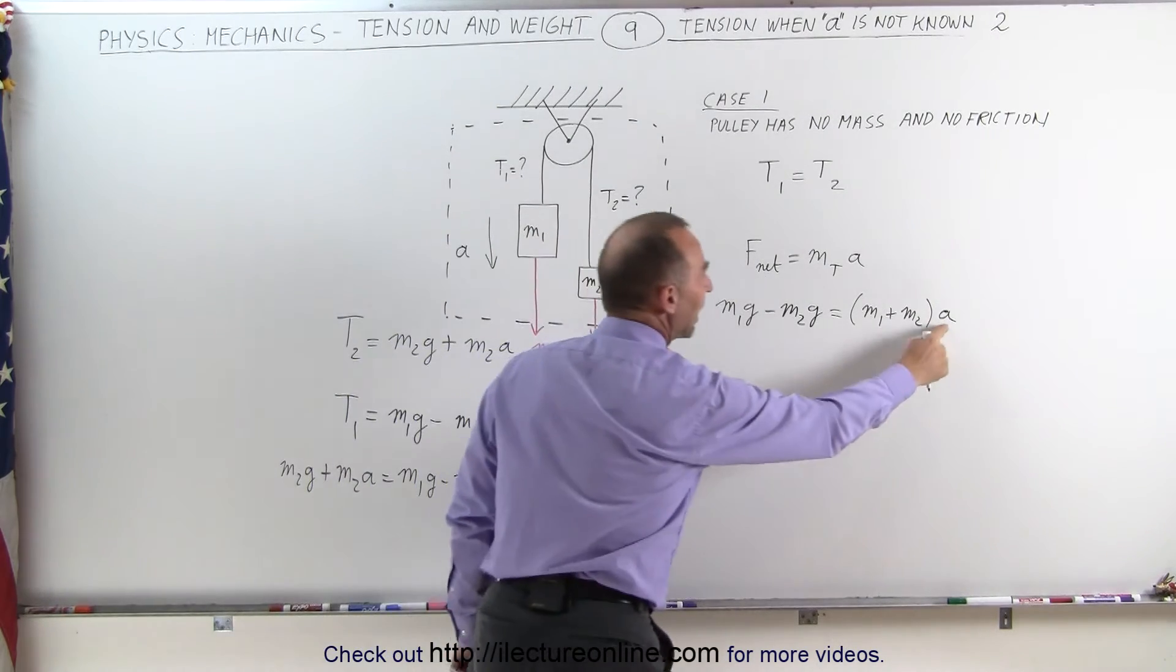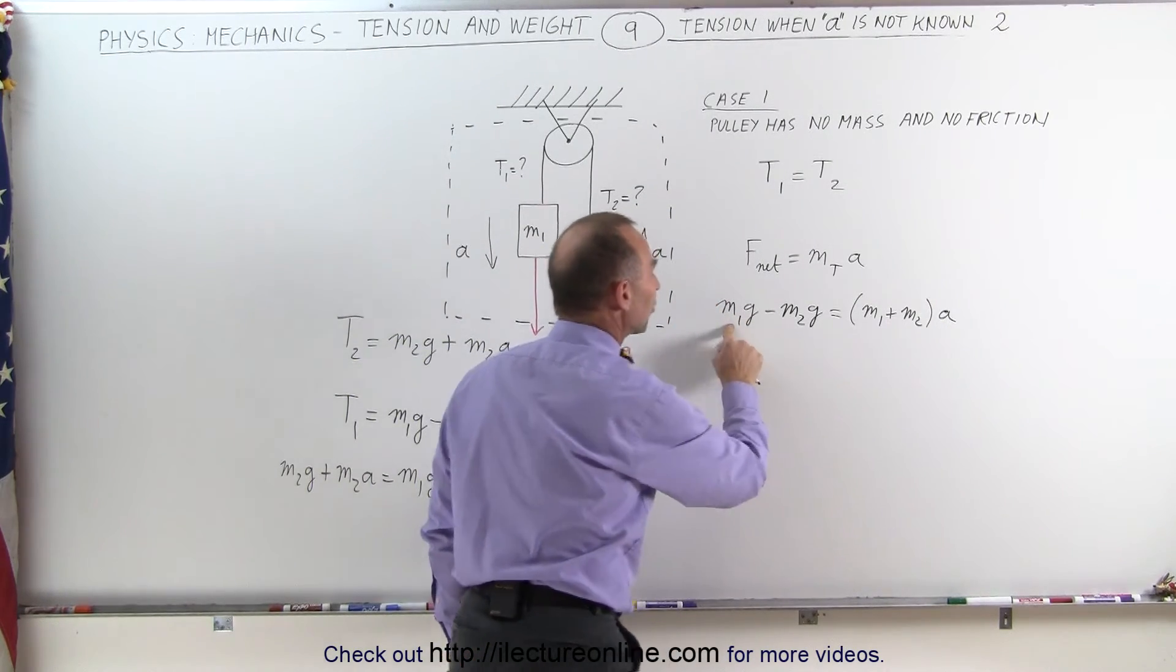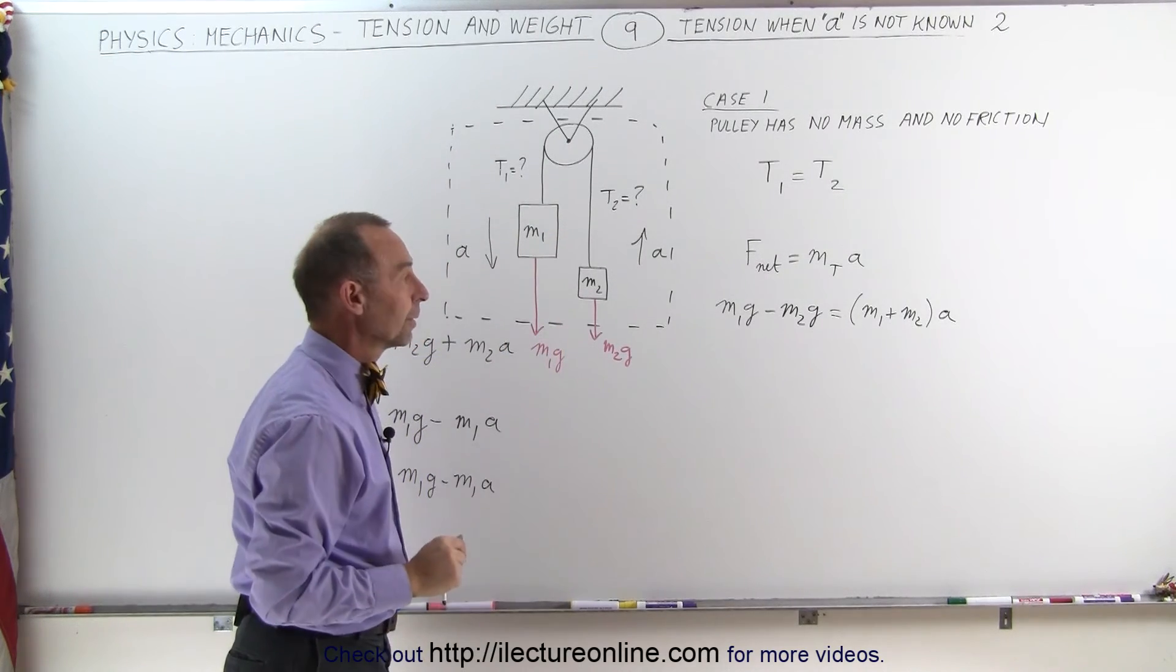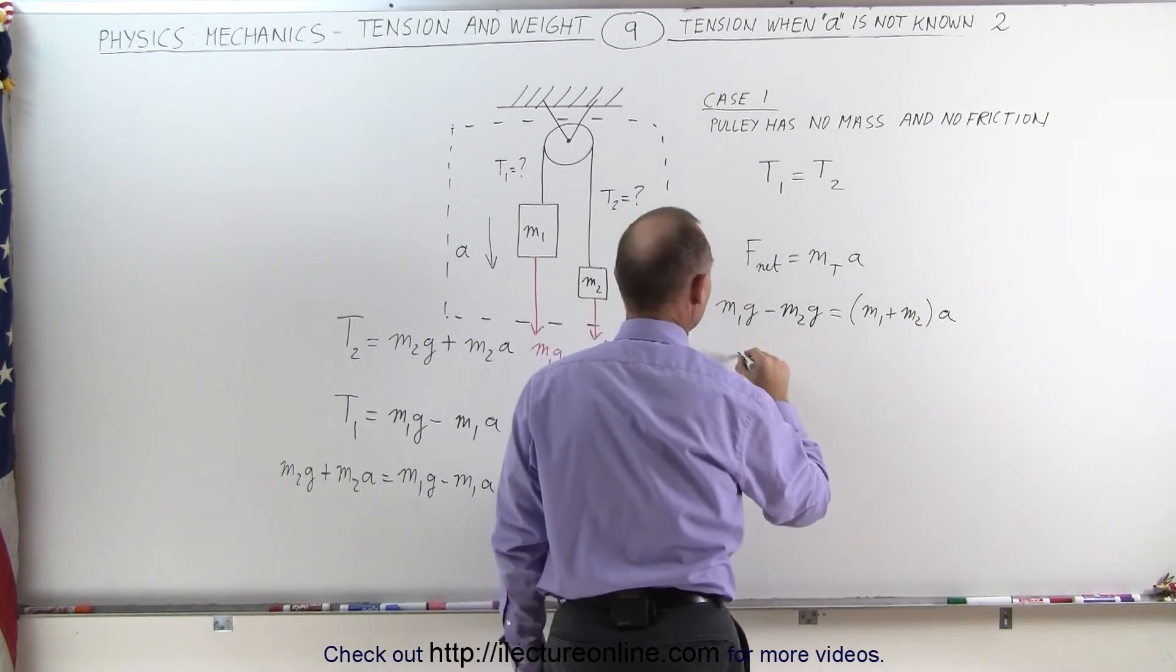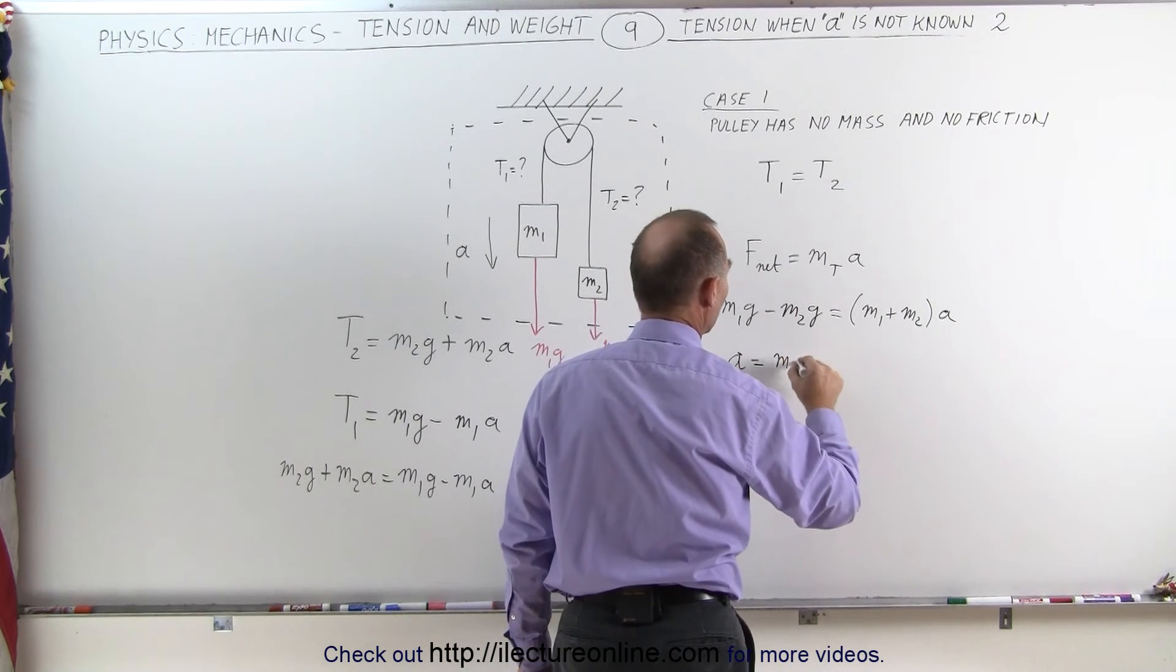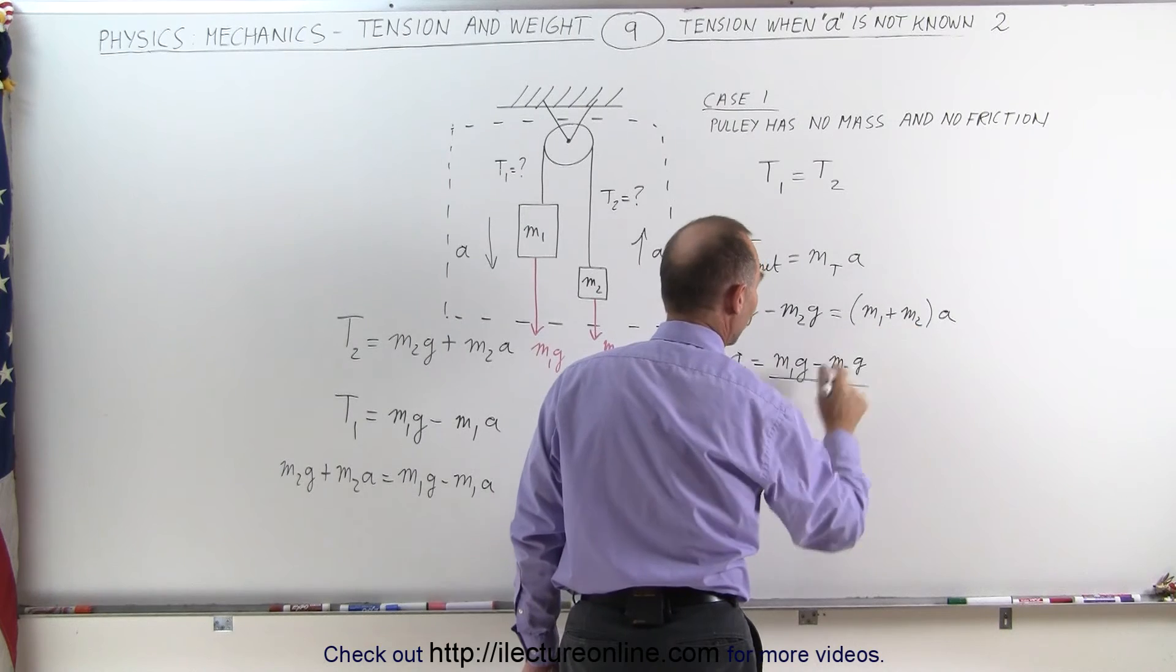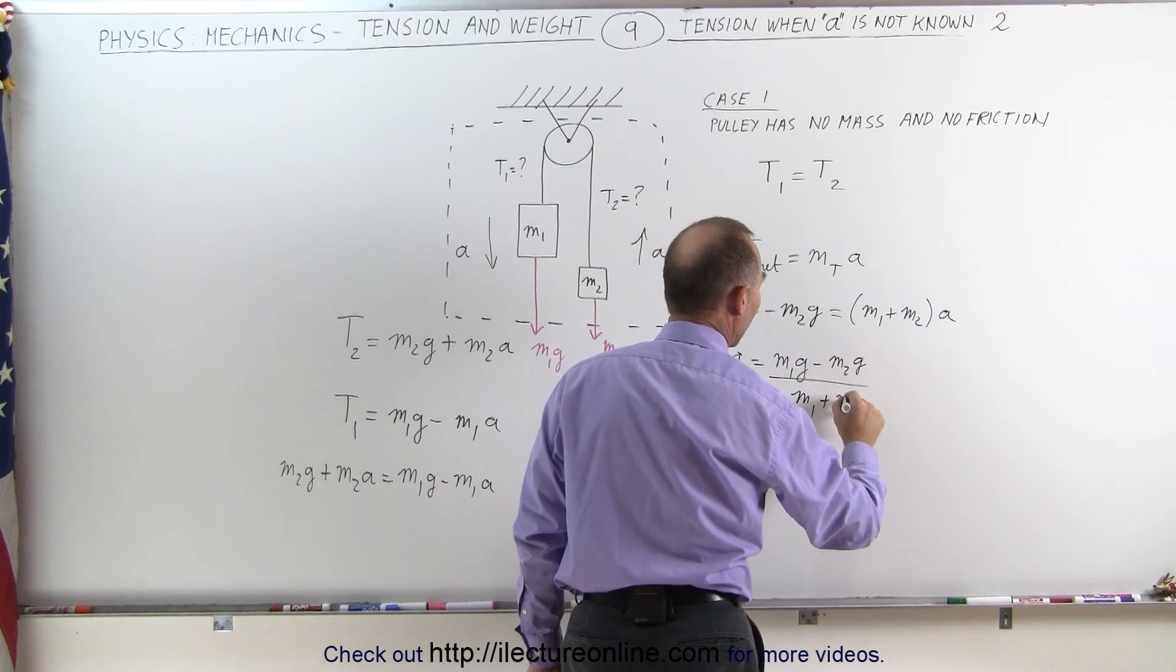Notice that the direction of A is in the same direction as the direction of the force on M1. We can now solve for A by saying that A is equal to M1G minus M2G divided by the coefficient M1 plus M2.